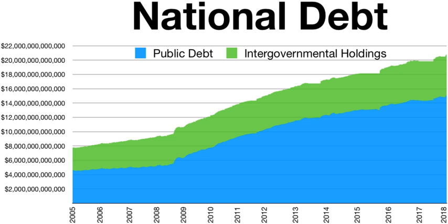Historically, the U.S. public debt as a share of gross domestic product (GDP) has increased during wars and recessions, and subsequently declined. The ratio of debt to GDP may decrease as a result of a government surplus or due to growth of GDP and inflation. For example, debt held by the public as a share of GDP peaked just after World War II at 113 percent of GDP in 1945, but then fell over the following 35 years. In recent decades, aging demographics and rising healthcare costs have led to concern about the long-term sustainability of the federal government's fiscal policies.